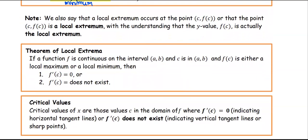Note that we also say a local extremum occurs at the point — the point means the ordered pair. The first coordinate is the x, the second coordinate is the y, or the point (c, f(c)), where f(c) is called the local extremum value.